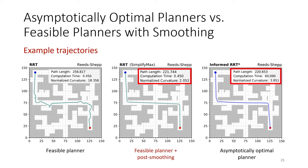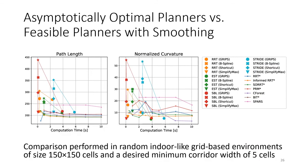In another experiment, we compare the different combinations in random indoor-like grid-based environments using the Reeds-Shepp steer function. As we can see from the figures, the post-smoothing algorithms, GRIPS and SimplifyMax often significantly decrease the path length and maximum curvature, with SimplifyMax typically running faster.